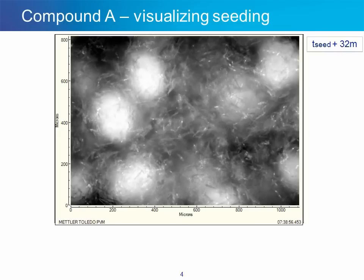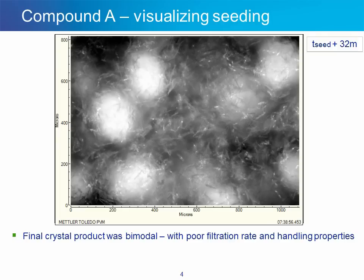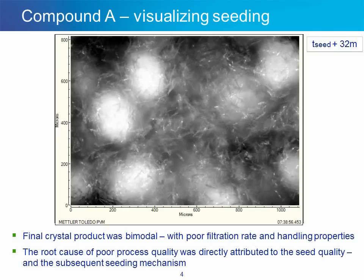What this means is that this product is difficult to filter and handle due to the bimodal properties. Secondly, the root cause of this poor process quality and product quality can directly be attributed to the seed itself. The process knowledge obtained here by visualizing the seeding step is very important, because now an optimization is possible. To avoid this secondary nucleation event and this bimodal result, the seeding step must be characterized in more detail and improved in order to improve the process and the product.